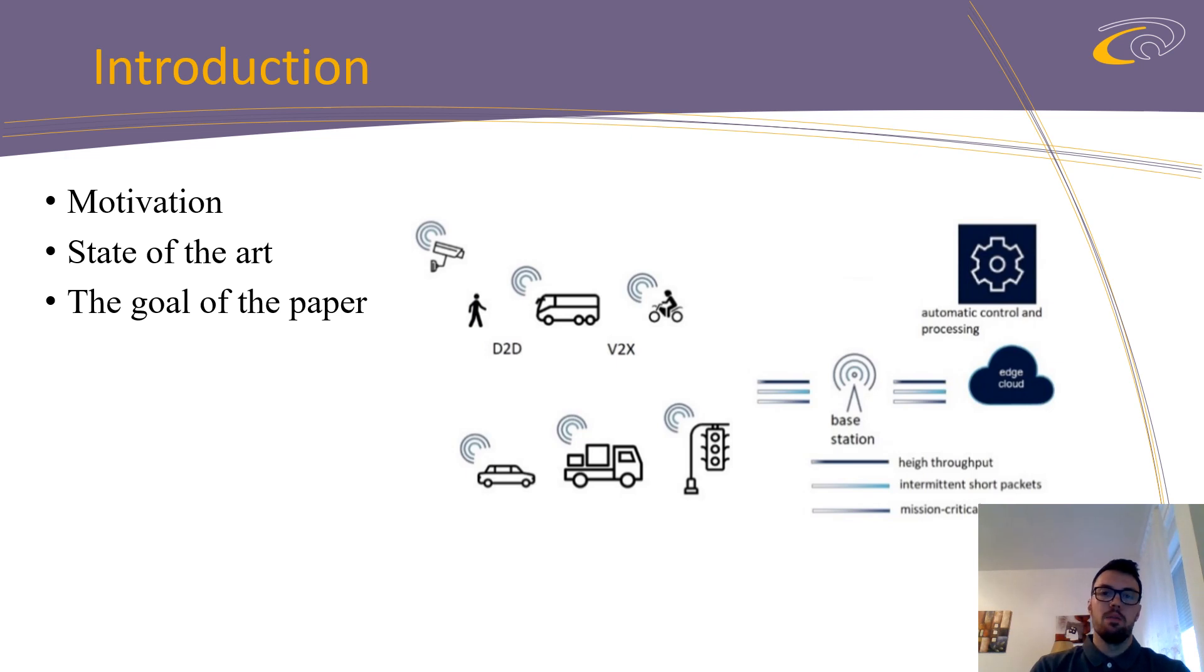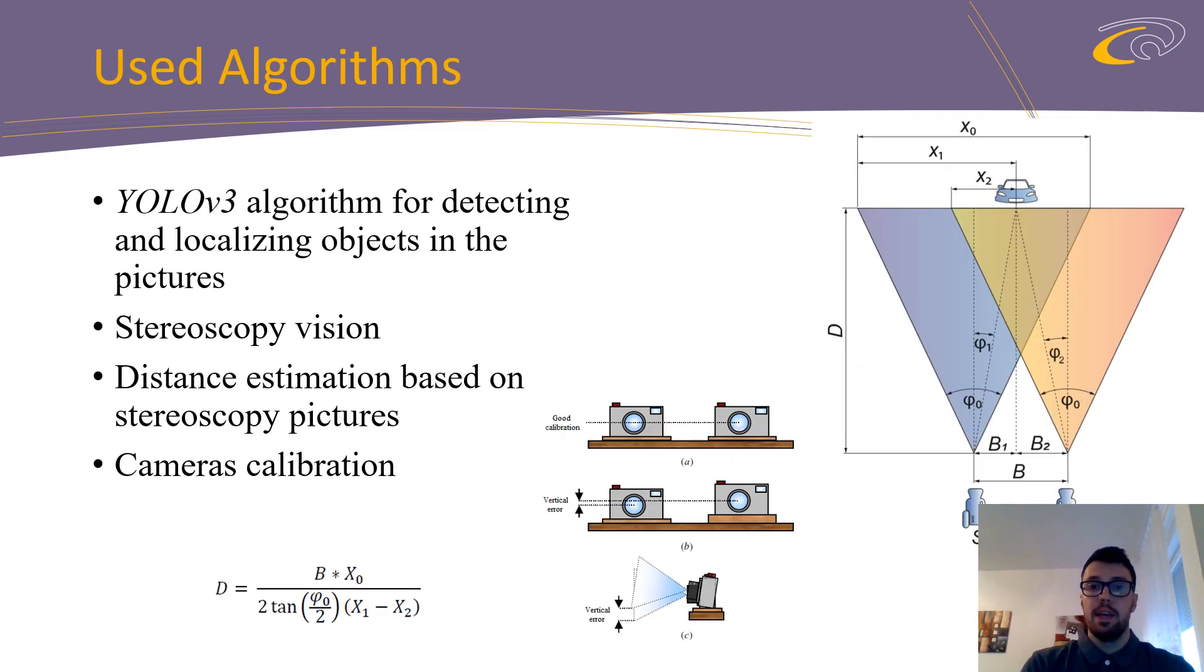Okay, now we can move to the next slide. This slide gives general overview of all algorithms that have been used for implementation of our work. First one is YOLO version 3, algorithm for detecting and localizing objects in the pictures. We choose YOLO because of his speed. He is considered as one of the fastest detectors today. Accuracy of YOLO is very high as well, especially in his newest third version, where is significantly upgraded detection of small objects.